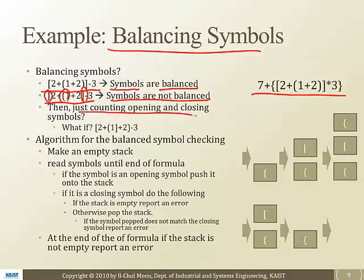How can you just count the opening and closing symbols? Here we have one bracket opening, one bracket closing, one parentheses opening, and one parentheses closing — so it all matches out. But actually it doesn't add up. It doesn't balance. It is not balanced. So simple counting doesn't work here.